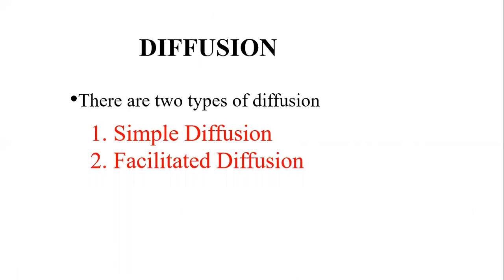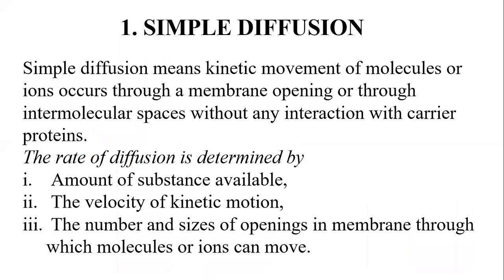Diffusion is of two types: simple and facilitated diffusion. Simple diffusion means kinetic movement of molecules or ions through membrane openings or through intermolecular spaces, without any interaction with carrier proteins or energy requirement. The rate of diffusion is determined by the amount of substance available, the velocity of kinetic motion, and the number and size of openings in the membrane through which molecules or ions can move.